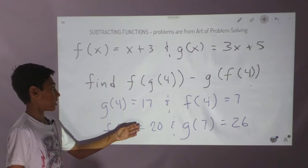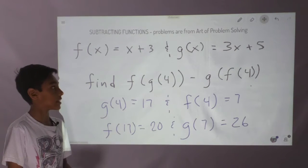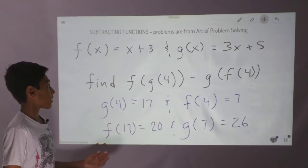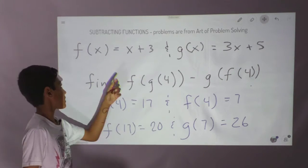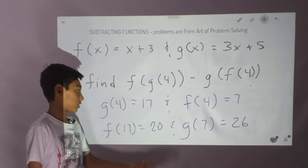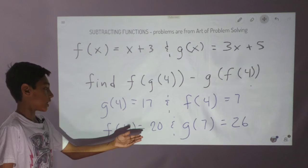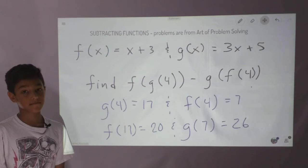And g of 4 was 17, which equals 17 when you replace 4 with x. And then you put in 17 here, and then the same thing with f of 4. We plugged in 4 for x and we got 7, and we put it into this function. And that's how we got 20 and 26, and that's how we got negative 6.